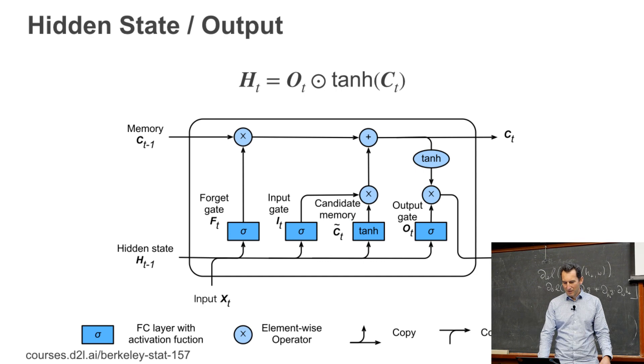And then, now comes the fun thing, namely, the hidden and output gate is just the output gate times tanh of that memory cell. So remember, this h_t actually then is used to manipulate the memory again. And then, this is used again to manipulate the hidden state. So that's why you really need two of those variables to carry around with you all the time.